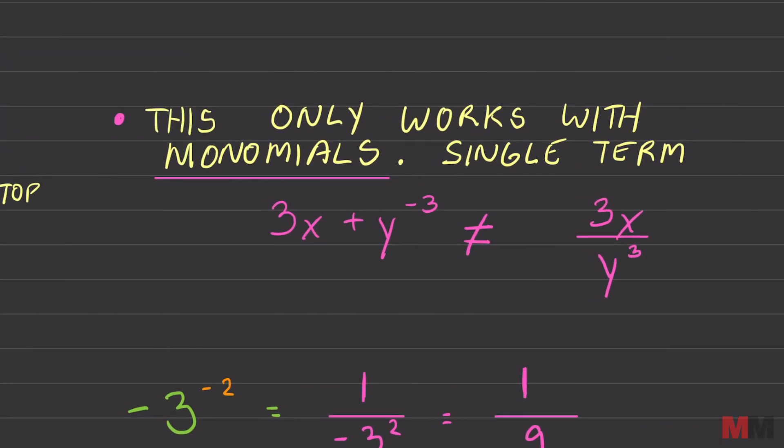This only works with monomials, single terms. The moment you get two terms, and you can tell how many terms there are by pluses and minuses, so this is two terms. You can't say that I'm gonna write this at the bottom like that. That is not like that. It only works for monomials.